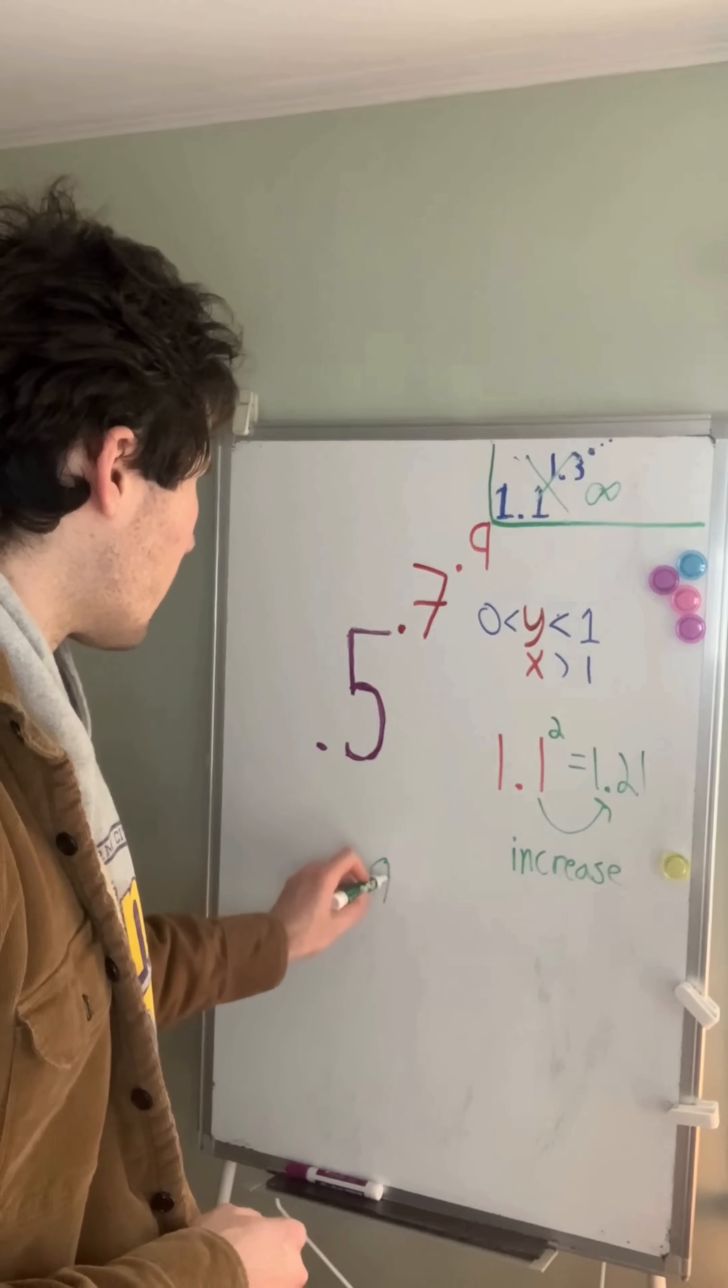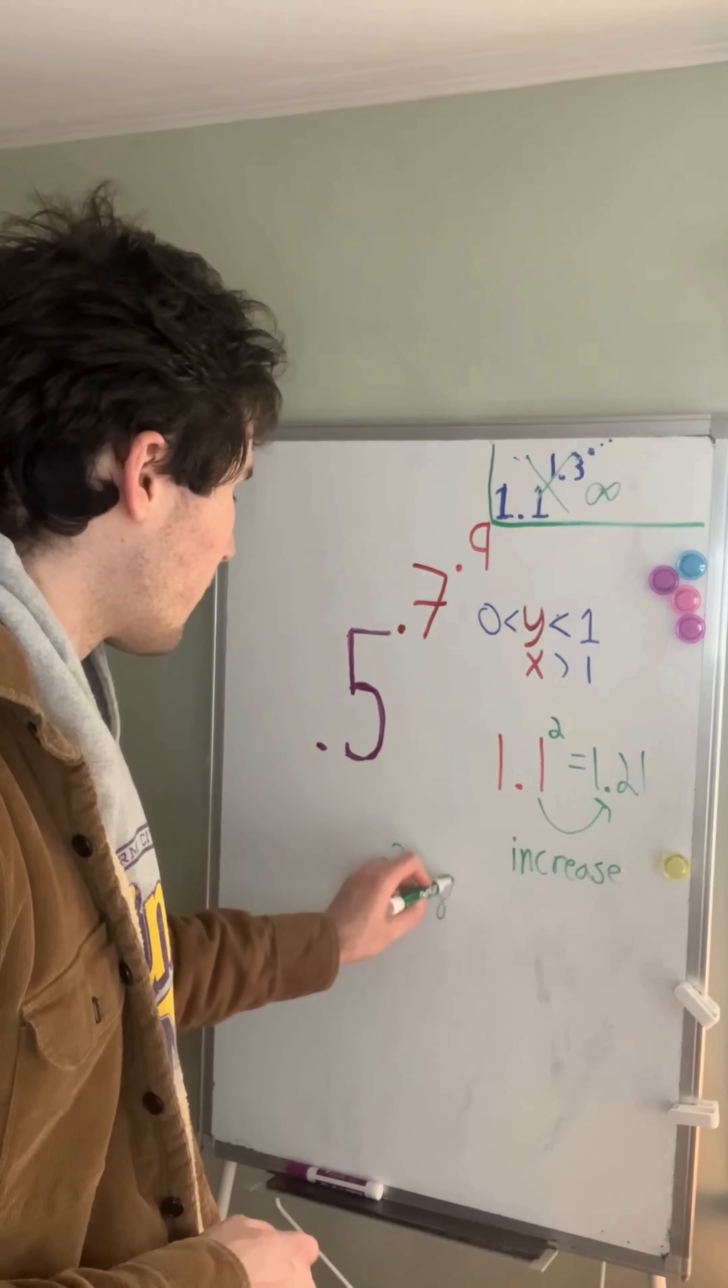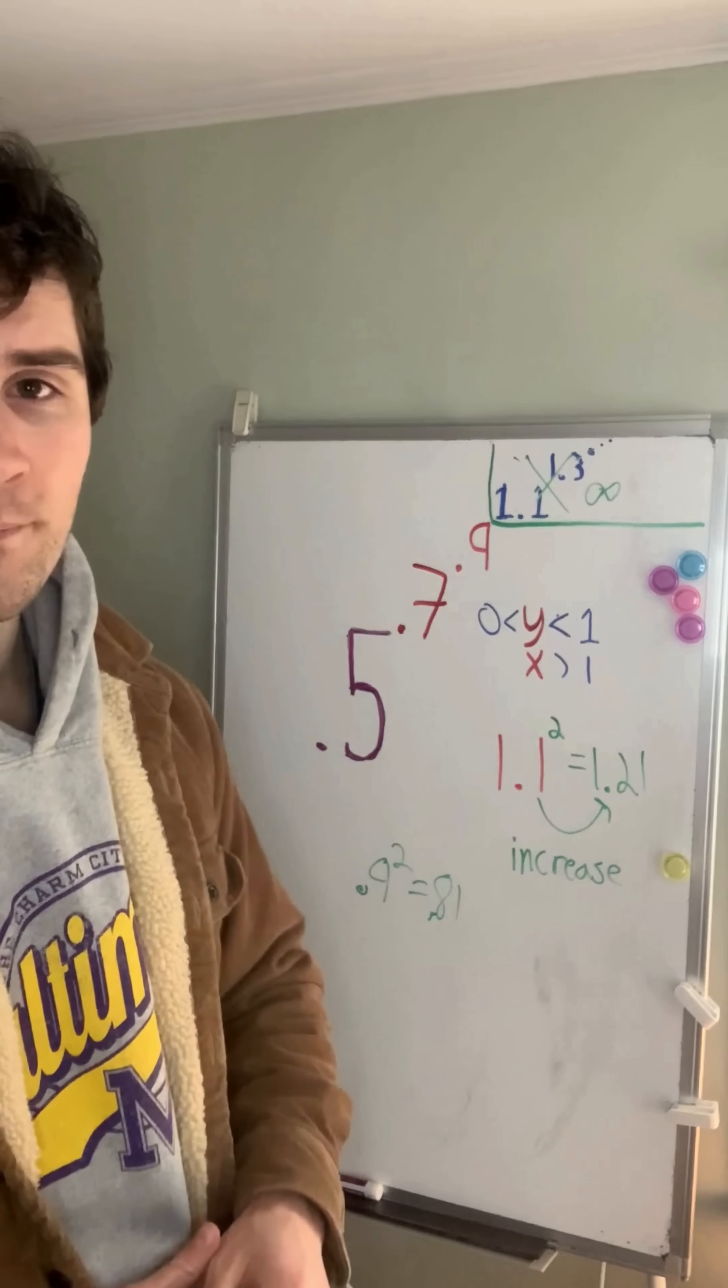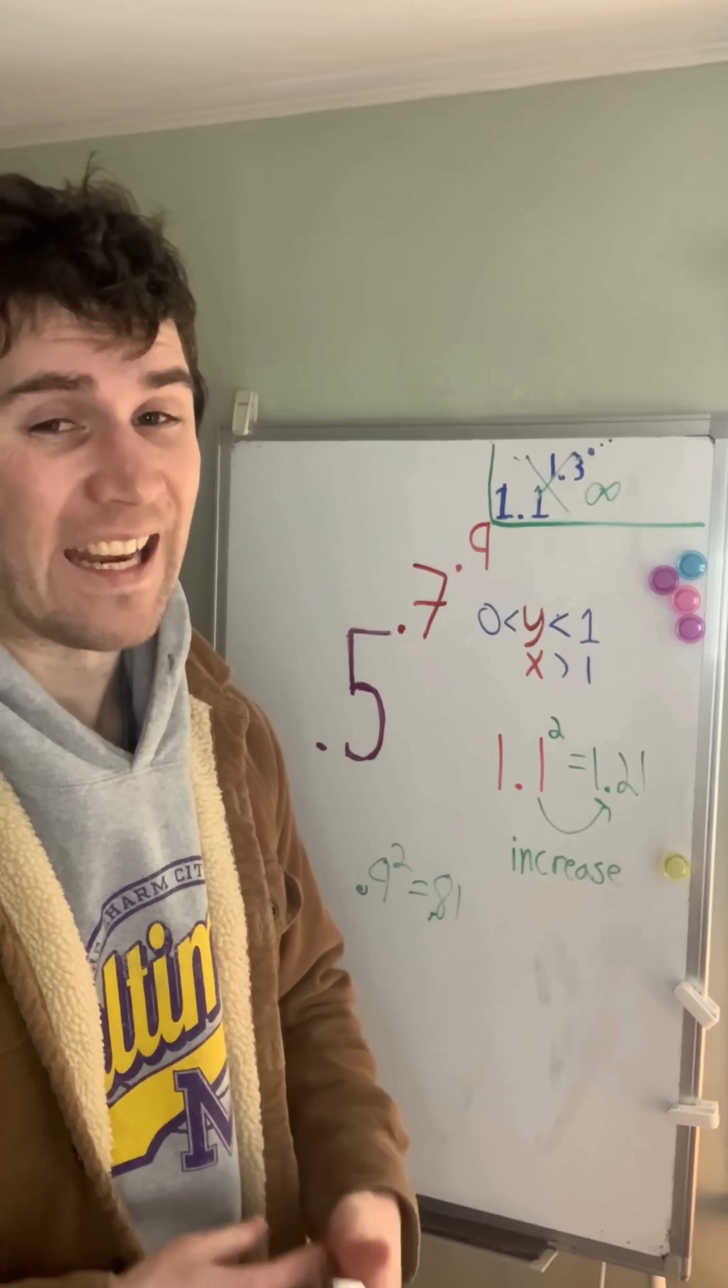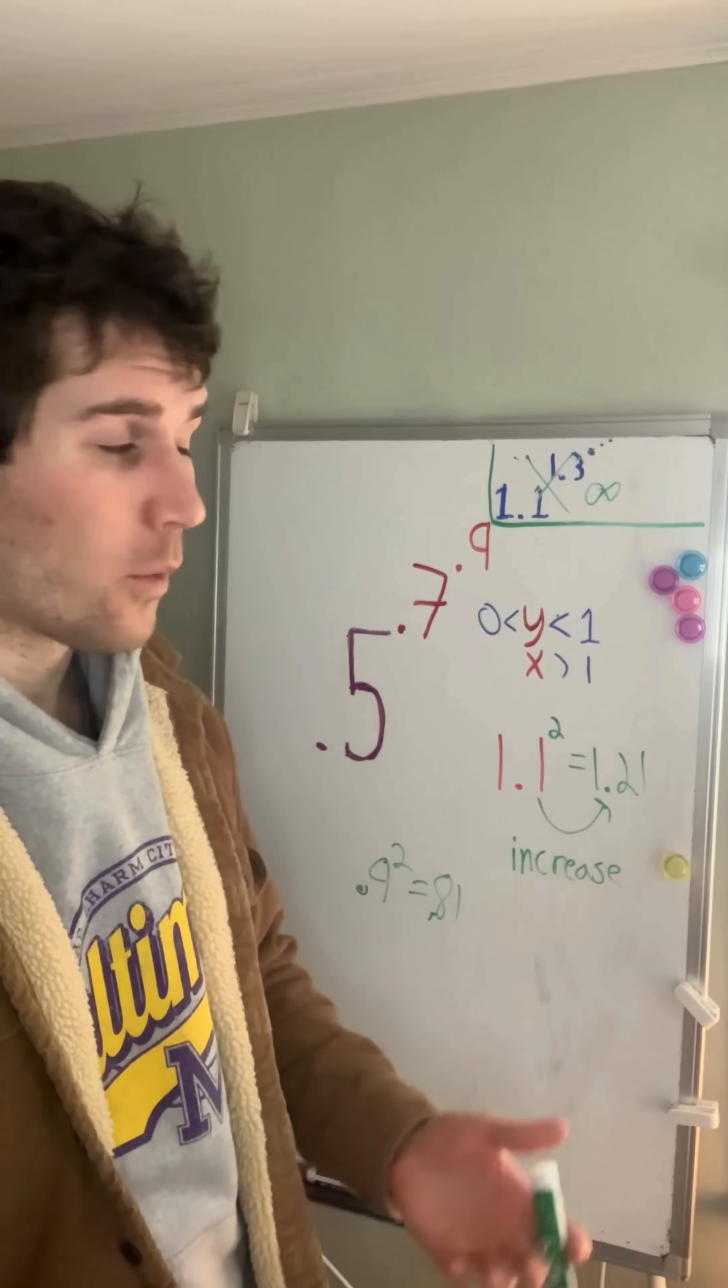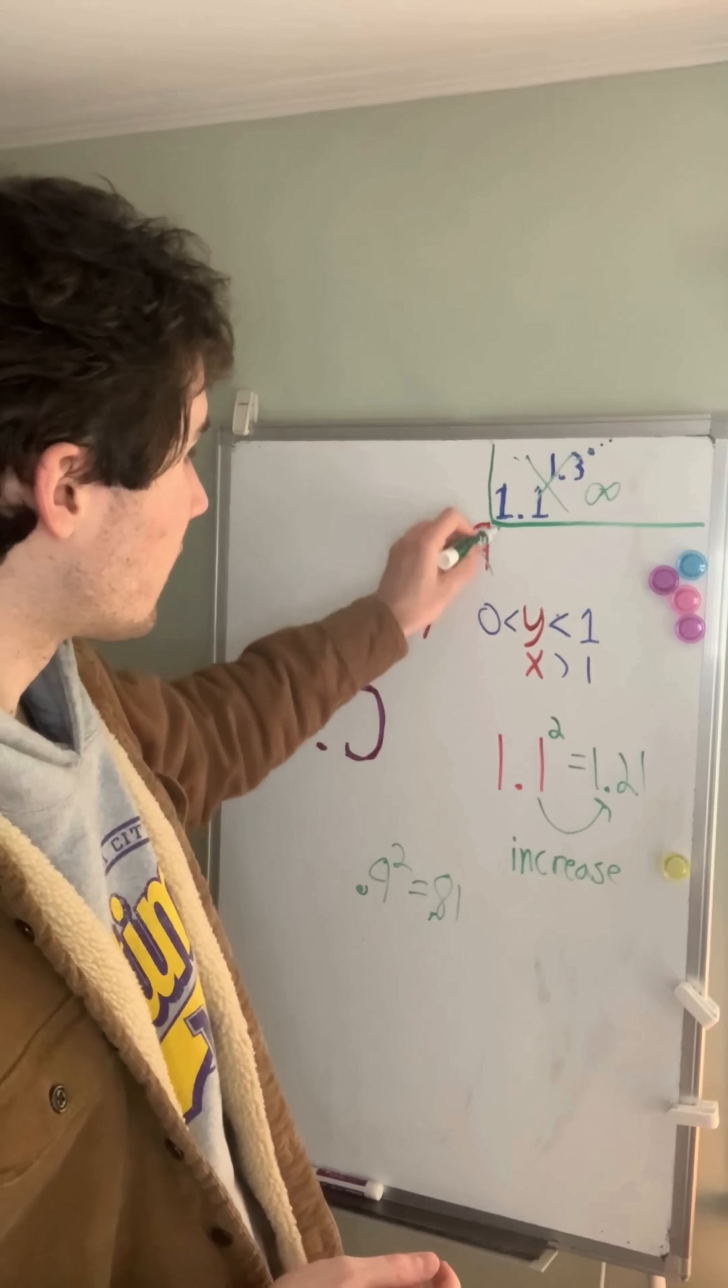So 0.9 squared, for example, is roughly 0.81. Now what's going to happen if we multiply 0.9 by itself an infinite number of times? Well, it's actually going to head towards 0.